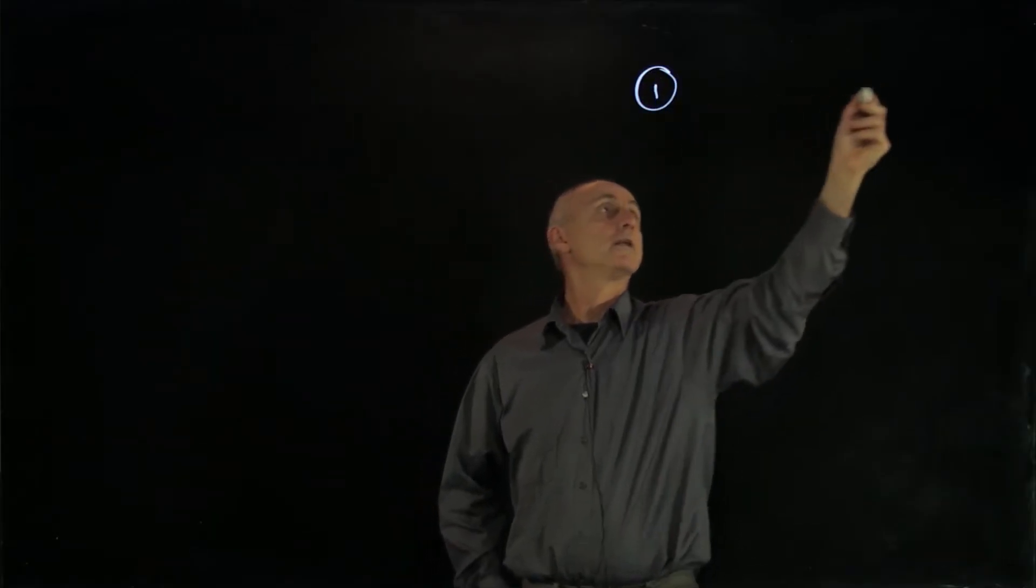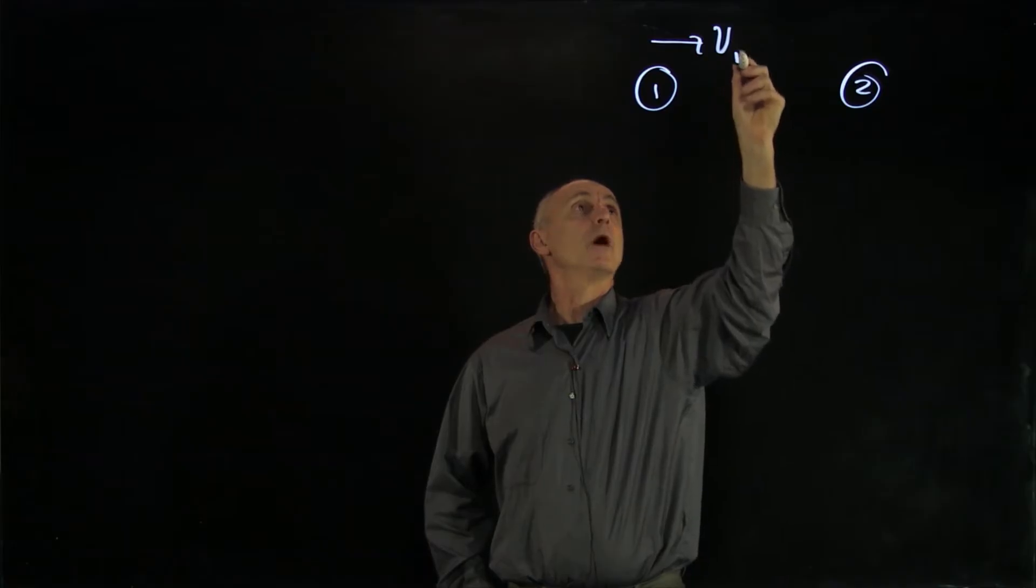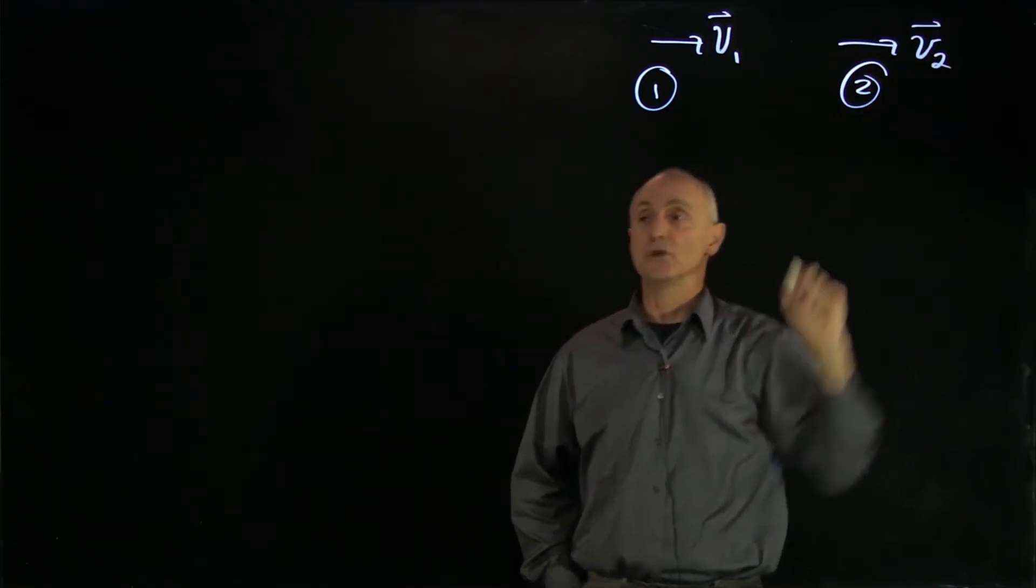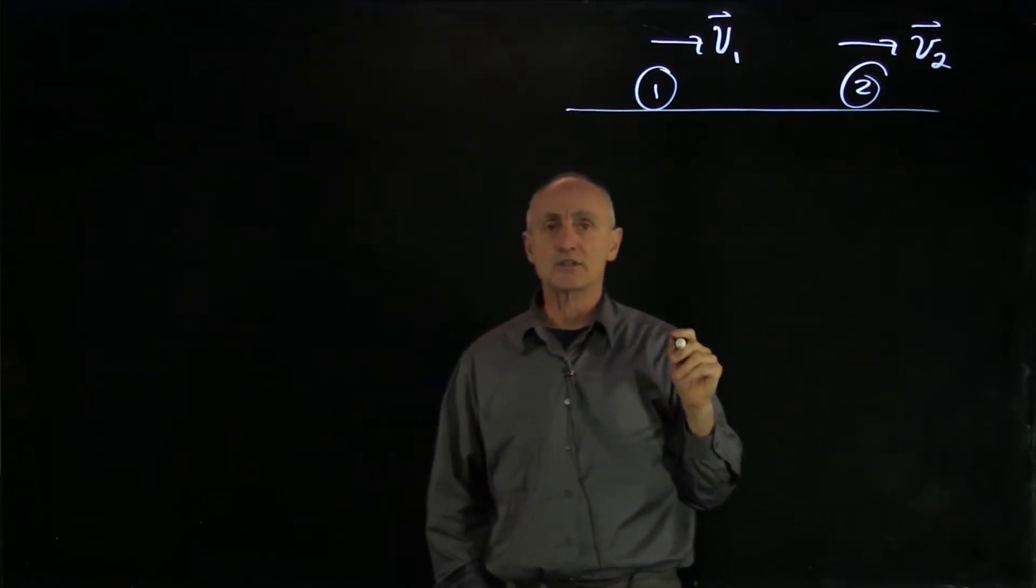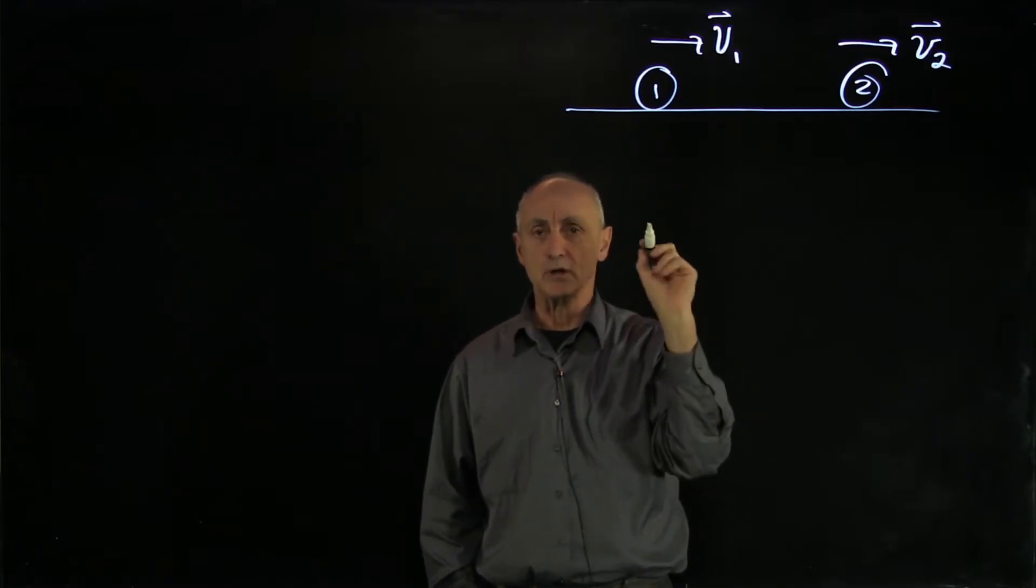For one-dimensional collisions, let's talk about two objects, object one and object two, moving with velocity v1 and another object moving with velocity v2. Let's say they're moving on the ground. Now, I'd like to introduce the concept of relative velocity, a concept that we experience all the time in our lives.